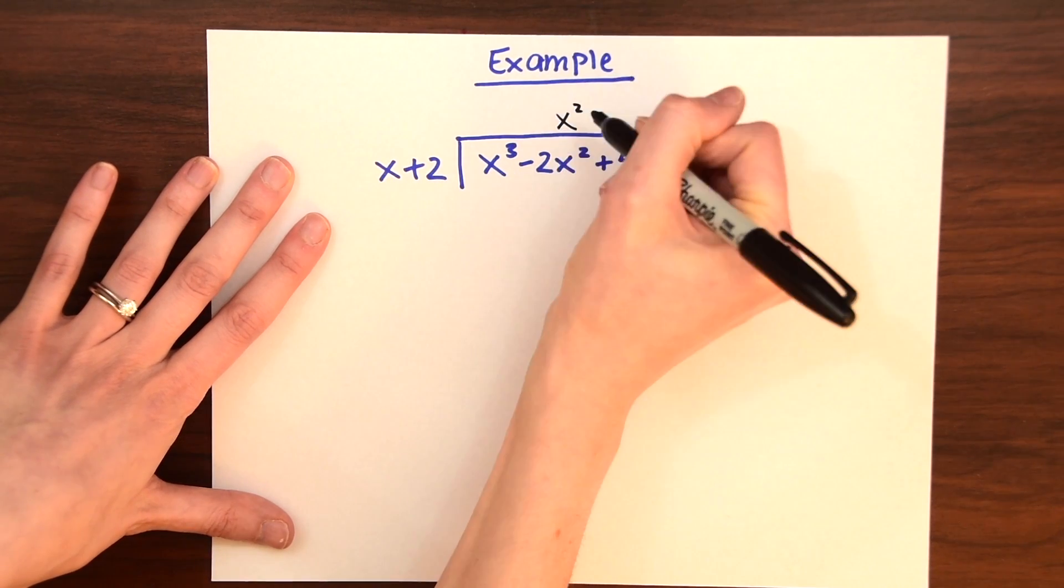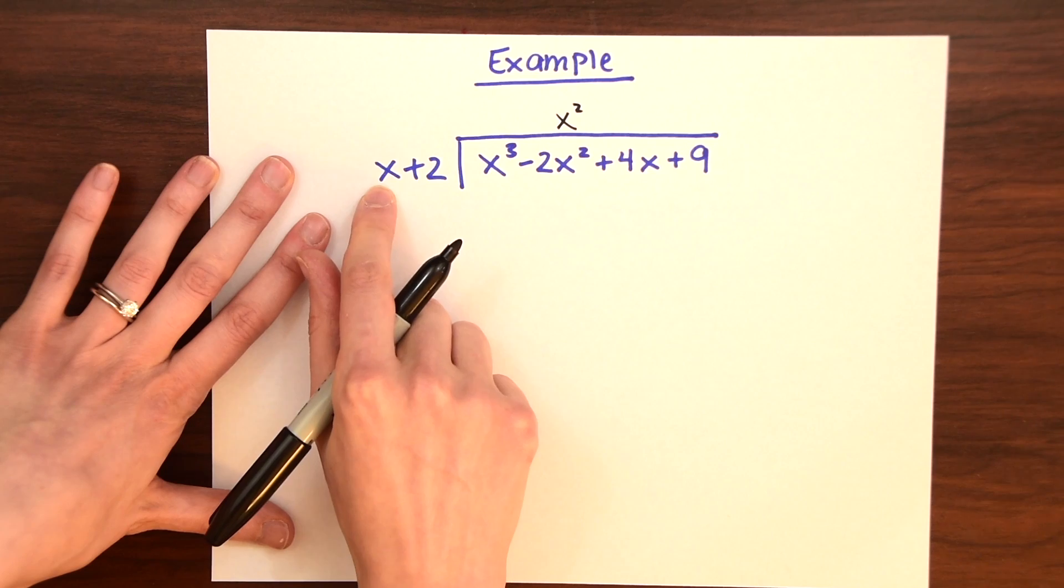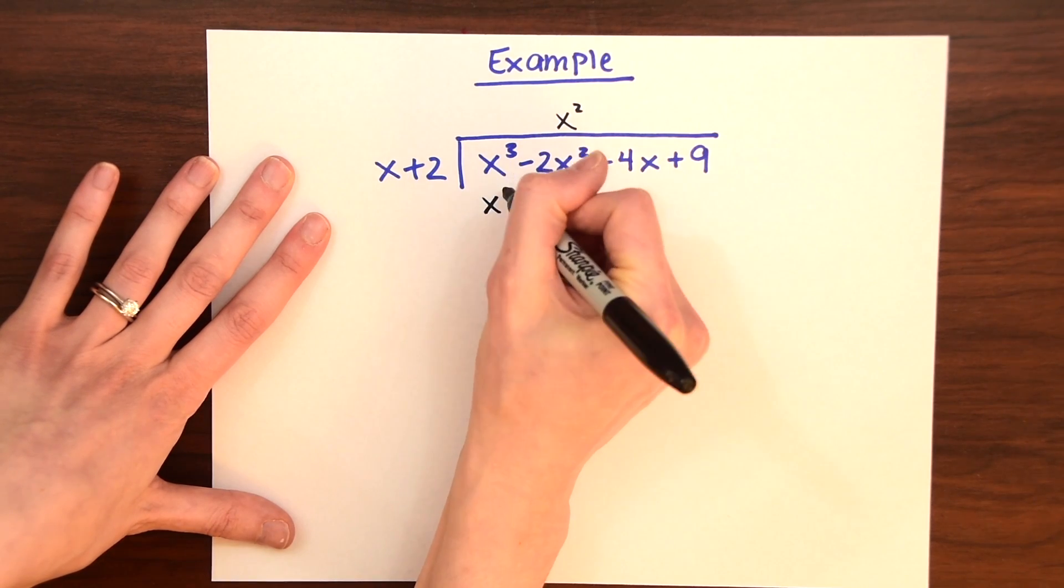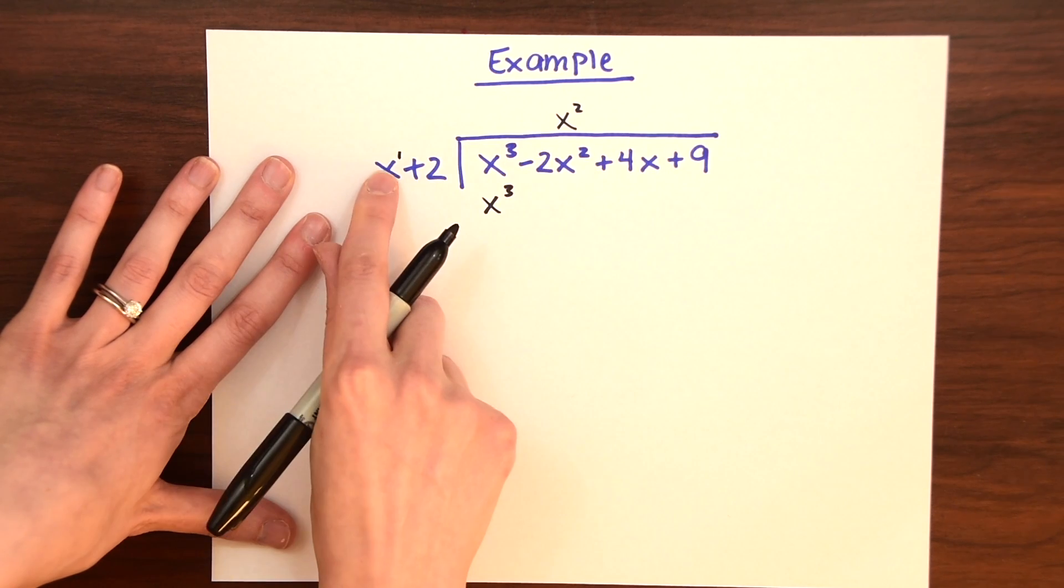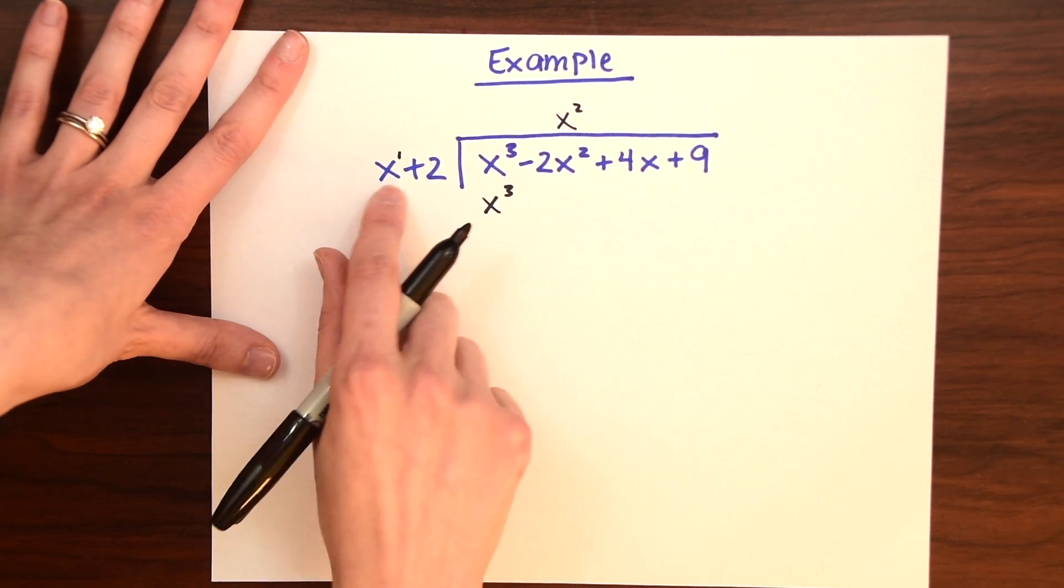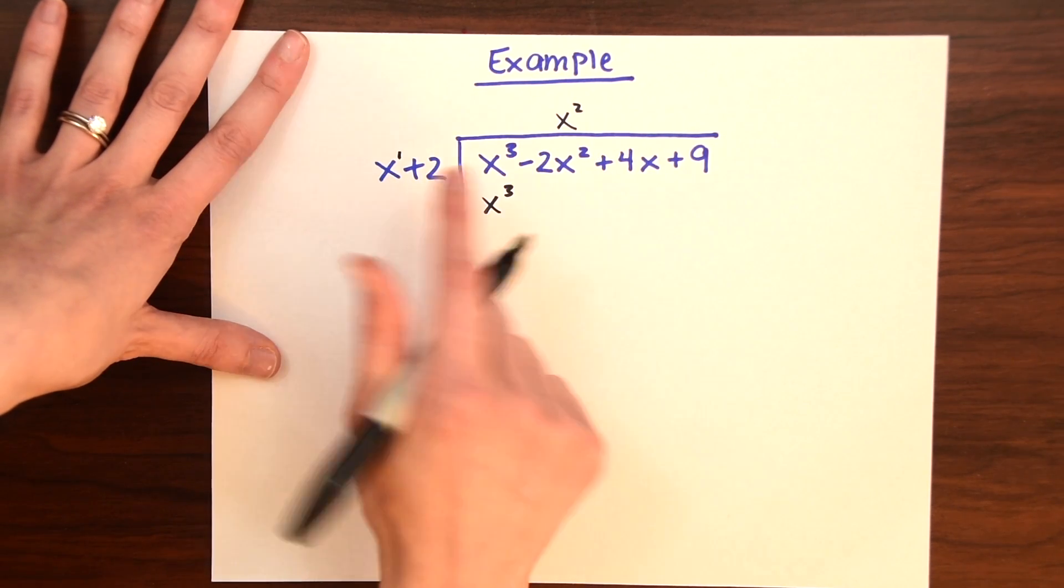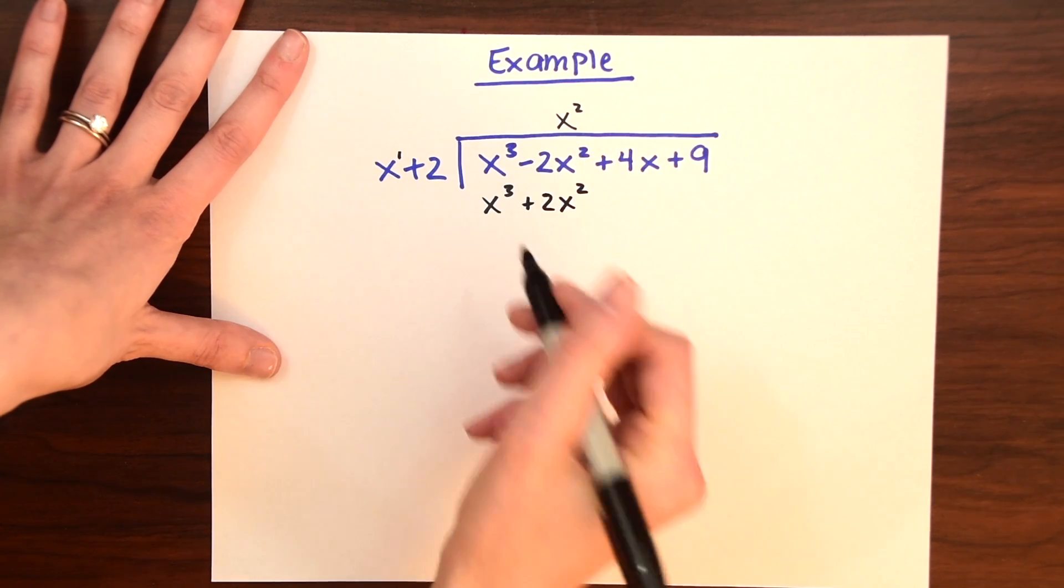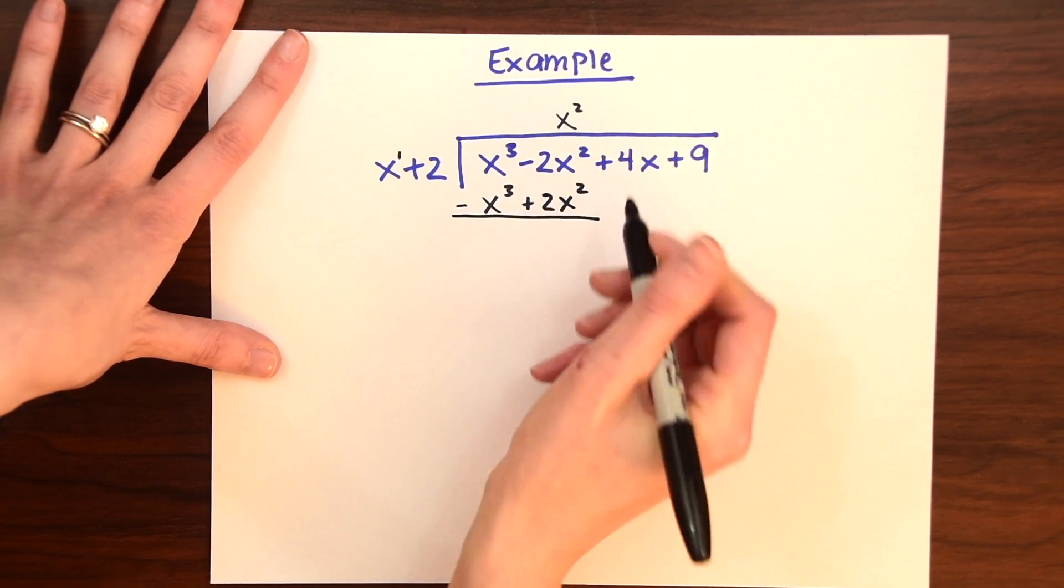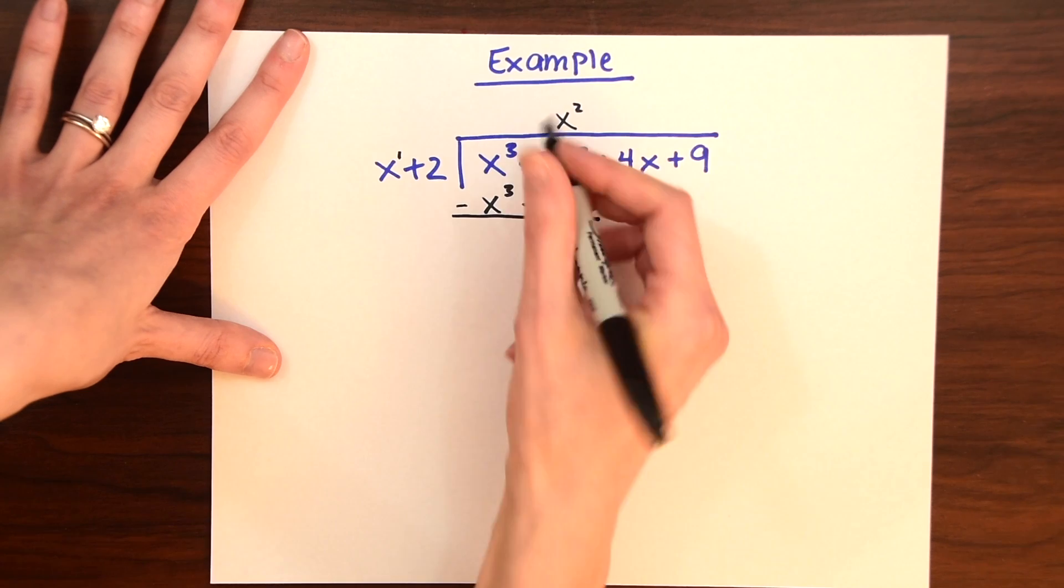So now we have x squared times x, which gives us x cubed times, adding those exponents, this has 2 plus, this has like a little 1 right here. And then we're going to multiply the rest. So we have x squared times 2, so that's plus 2x squared. And then now we just subtract these. So these cancel out right away, x cubed minus x cubed.